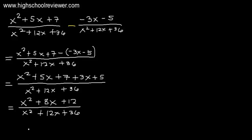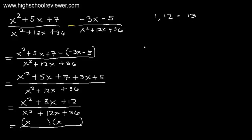Looking at the numerator and denominator, we can still factor these out. Let's factor x squared plus 8x plus 12 first. The factors of x squared are x times x. We find factors of positive 12 that give a sum of positive 8. Trying 1 and 12 gives 13. Trying 2 and 6 gives positive 8, which matches. So we use positive 2 and positive 6. Now let's factor the denominator x squared plus 12x plus 36, where the factor of x squared is x times x.